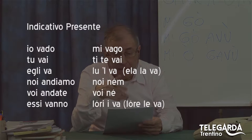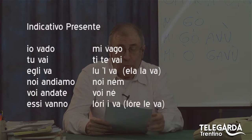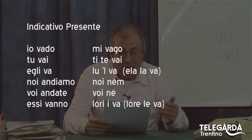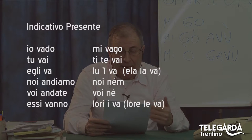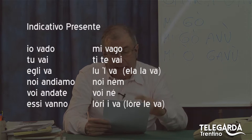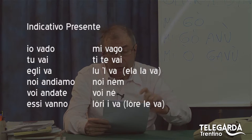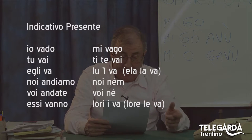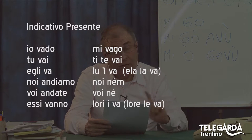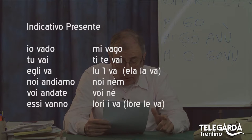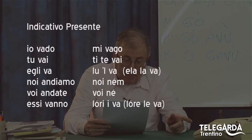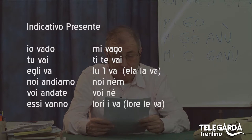Ecco, e qui vedete anche ho fatto un esempio: mi vago un treno, ti te vai en treno, lul va un treno. Attenzione che a volte cade la e, c'è la posto; a volte la e non cade, perché prima c'è una consonante.